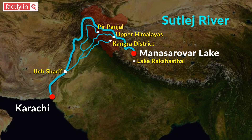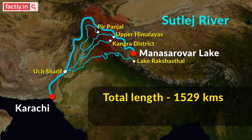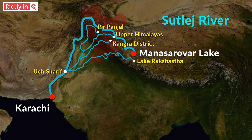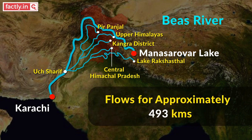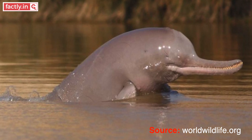Satlaj is the largest tributary of Indus, with a total length of 1,529 km, of which 657 km is in India. The waters are shared by both India and Pakistan. There are several hydroelectricity projects on Satlaj and it also forms the source for many irrigation canals. Beas is the smallest of the five rivers, originating in central Himachal Pradesh, flowing for approximately 493 km and joining river Satlaj in Punjab, India. Beas is home to one of the two subspecies of the South Asian river dolphin, called the Indus dolphin.